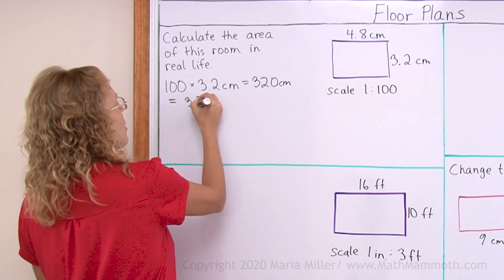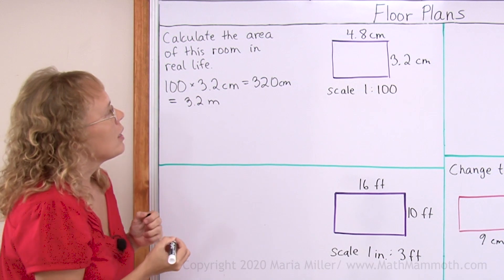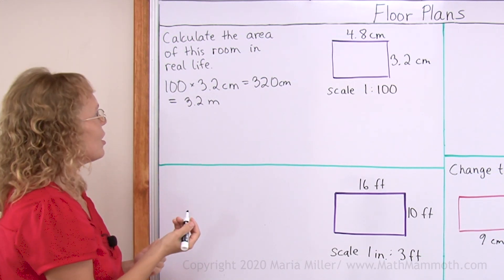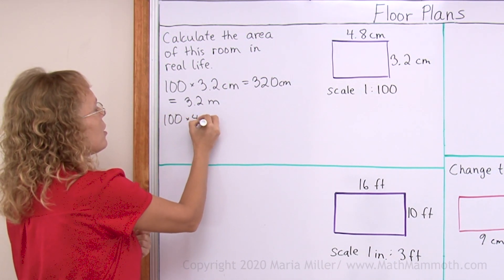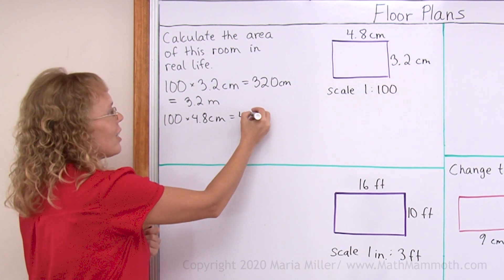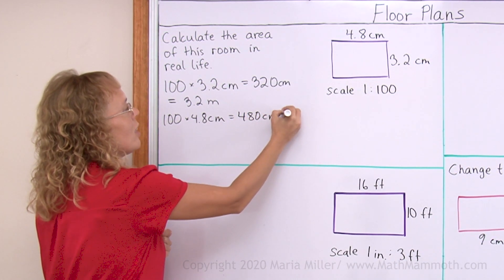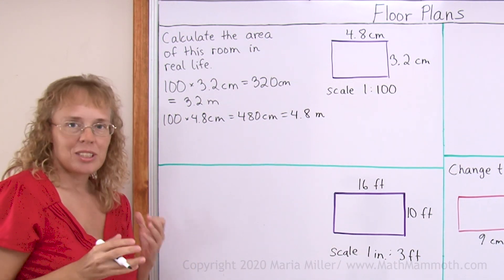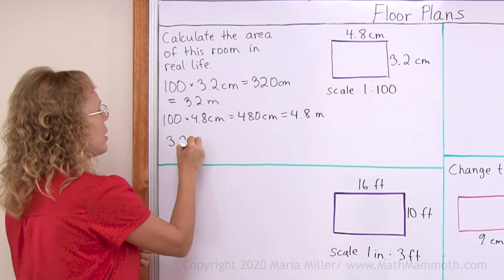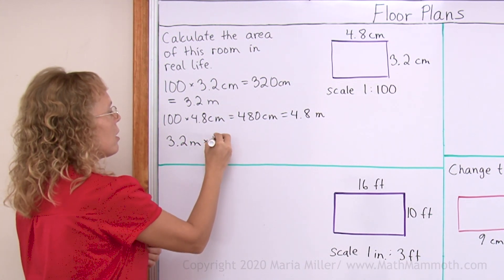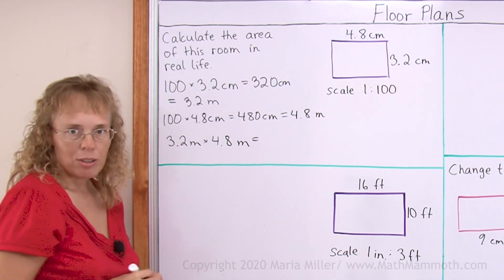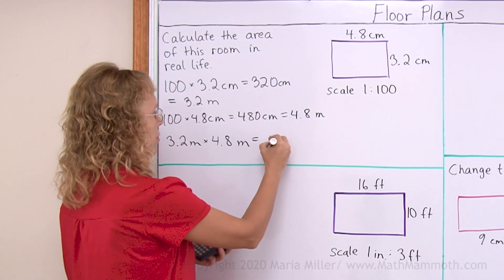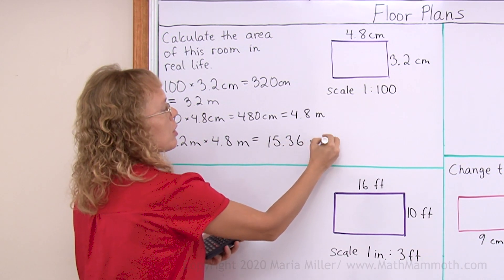which is 3.2 m. And then the other one, 4.8 cm times 100 will be 480 cm, which is 4.8 m. And now we just calculate the area by multiplying 3.2 m times 4.8 m. With the calculator I get it is 15.36 m².